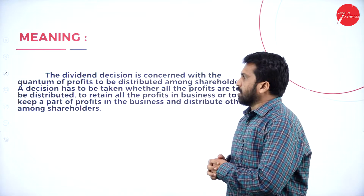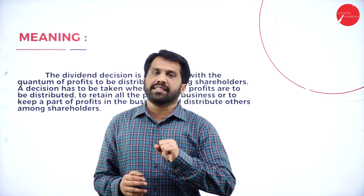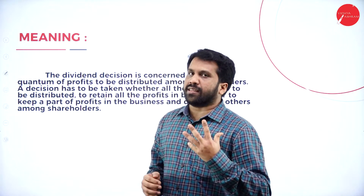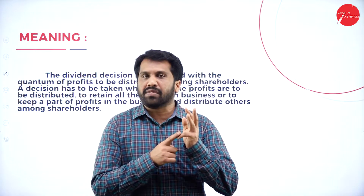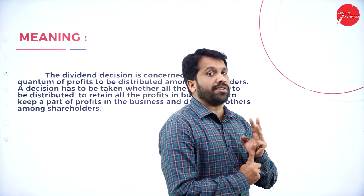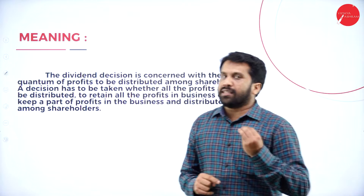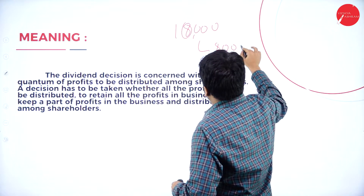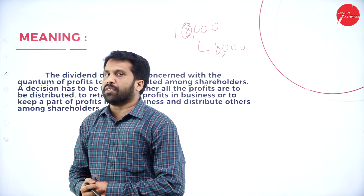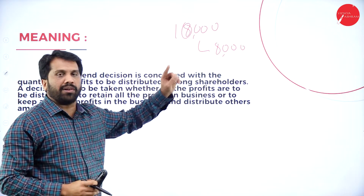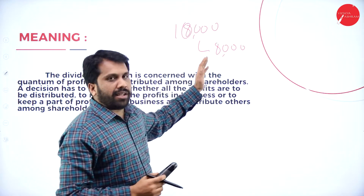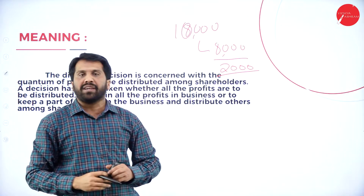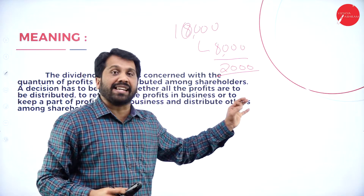The meaning of dividend decision: suppose the company has earned a profit of 10,000. What should the company do with the 10,000? They can keep it with themselves, or distribute it as dividend to shareholders. For example, out of 10,000, if 8,000 is given to shareholders, that 8,000 is called dividend distribution. The remaining 2,000 is kept for further investment, reserve, or retained earnings.